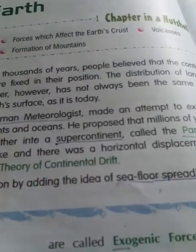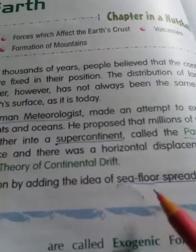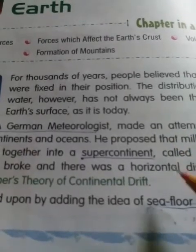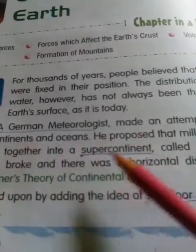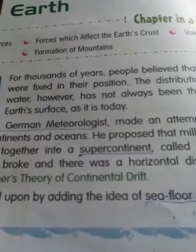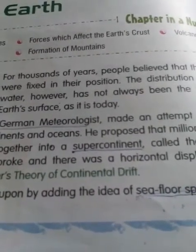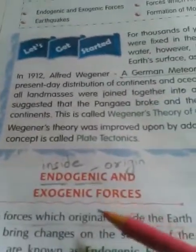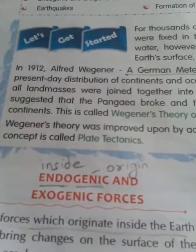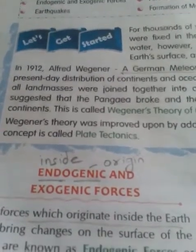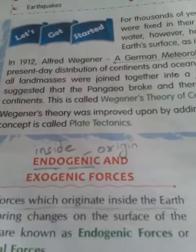These two theories — Wegener's continental drift and Harry Hess's sea floor spreading — together form the basis of the modern Theory of Plate Tectonics. The Theory of Plate Tectonics is the accepted modern explanation for how the Earth's surface changes.